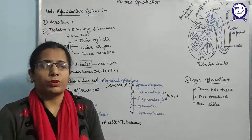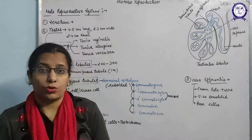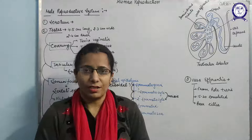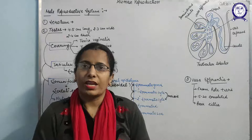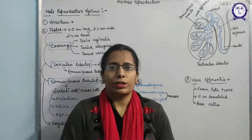The male reproductive system consists of a scrotum, a pair of testis, a pair of epididymis, a pair of vasa deferentia, a pair of ejaculatory ducts, a urethra, a penis, a prostate gland, a pair of bulbo-urethral glands, and the seminal vesicles.